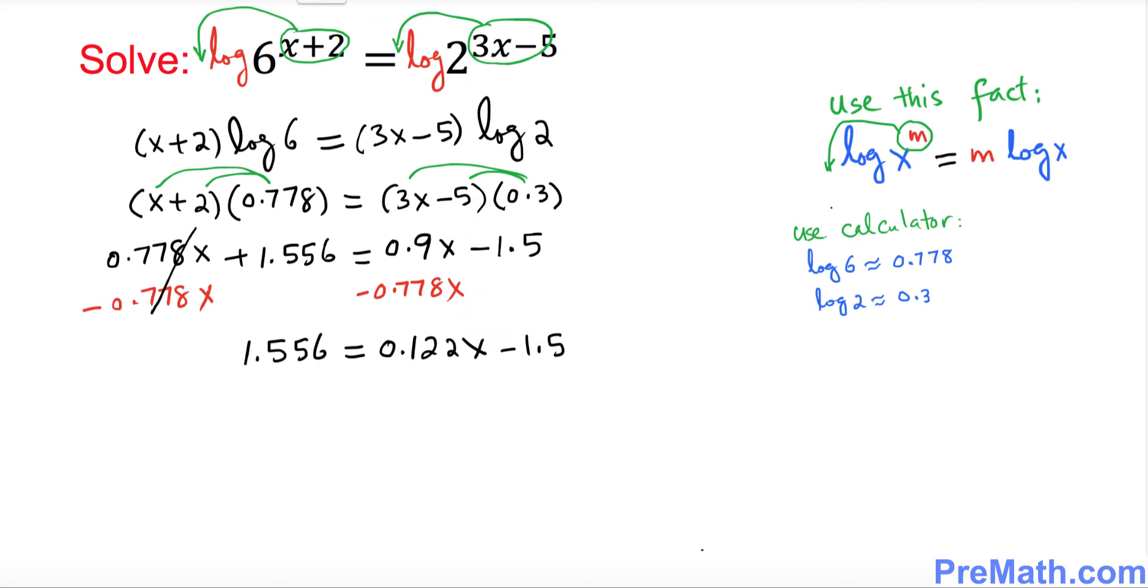Now next thing, I want you to add 1.5 on this side and 1.5 on this side as well. This on the right hand side is gone, so we ended up with 0.122x equals 3.056.